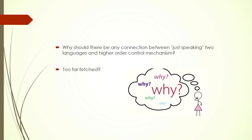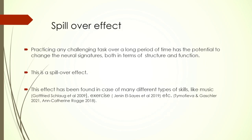One might think that bilinguals speaking more than one language would naturally be expected to have some consequences. But how and why should we connect language-related abilities with executive function? How is this connection even proposed? It works out because of a phenomenon called neuroplasticity, or in a more common layman term, the spillover effect.